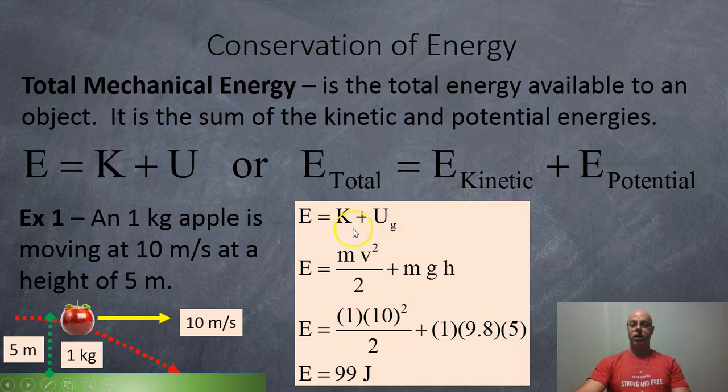E is equal to kinetic plus, in this case, it has gravitational potential energy. The E is going to be equal to mv squared over 2. That's the kinetic energy. mgh, that's the gravitational energy. Now we're just going to fill it in. We've got 1 for the mass, 10 for the speed.